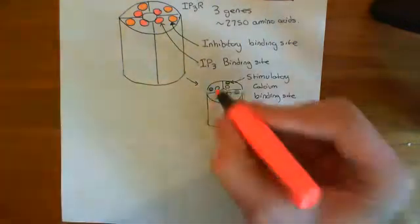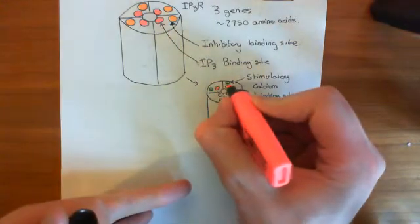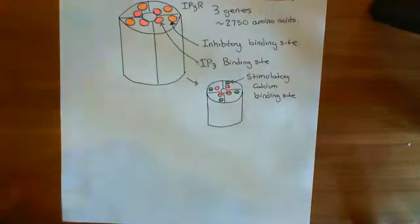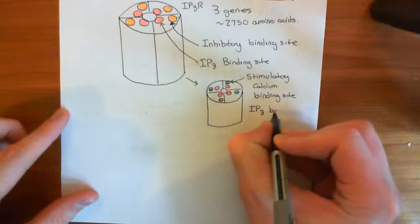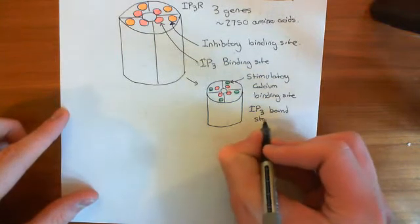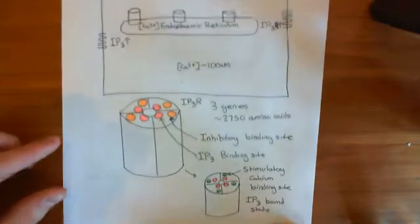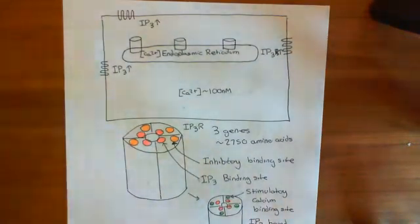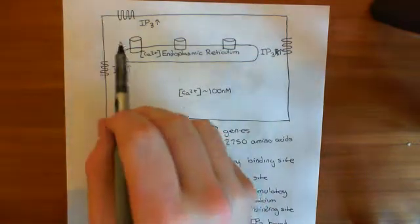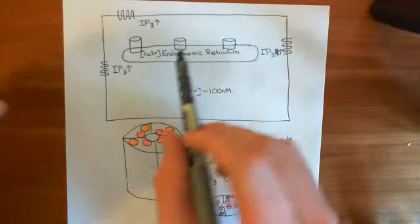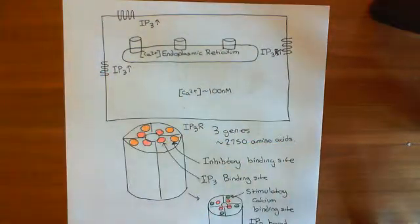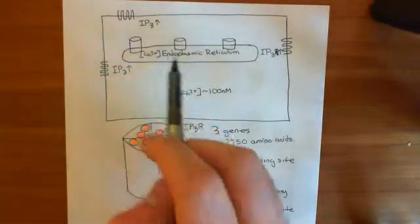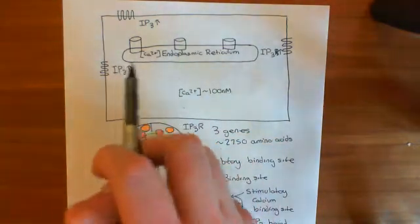In our hepatocyte, IP3 has gone up cytoplasmically everywhere. So IP3 is going to bind to all of the IP3 receptors, meaning all of the IP3 receptors now have IP3 bound — they are all primed and ready to go. All they are waiting for now is some calcium to trigger the whole thing off.